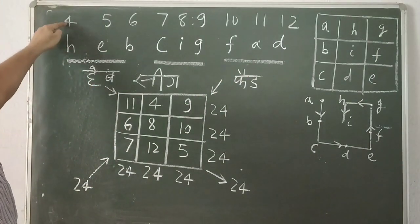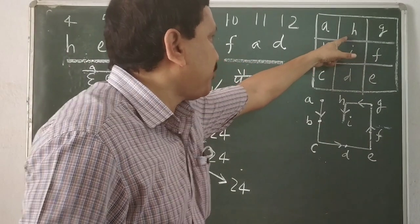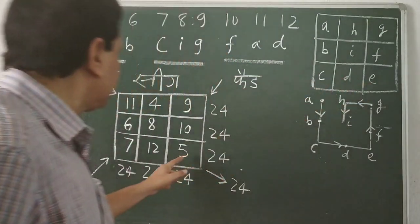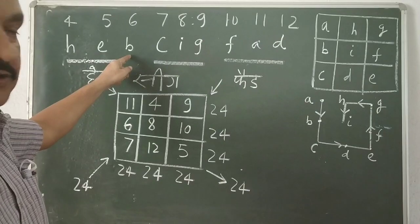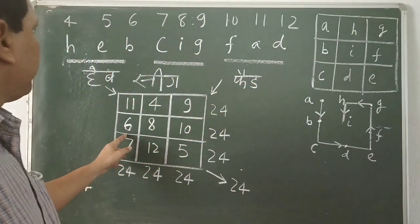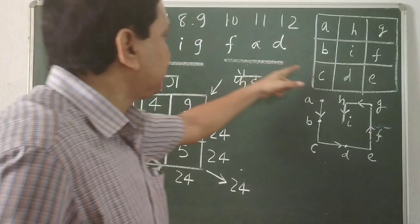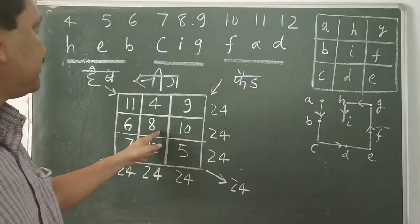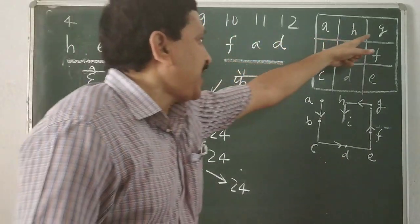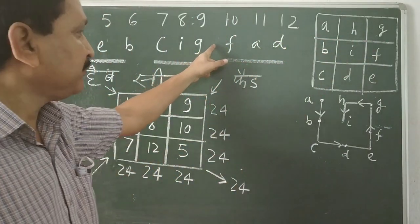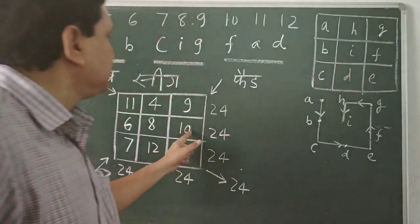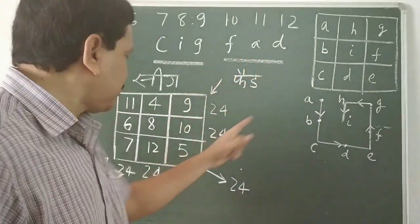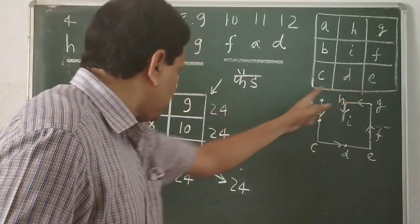Now h equals 4. Put the value of h, 4. e equals 5. Then b is 6. Then c is 7. Write 7. i is 8. Write 8. g is 9. Write g is 9. f is 10. Write f, 10. And a is 11. Write a, 11. And lastly d is 12. The d is here.